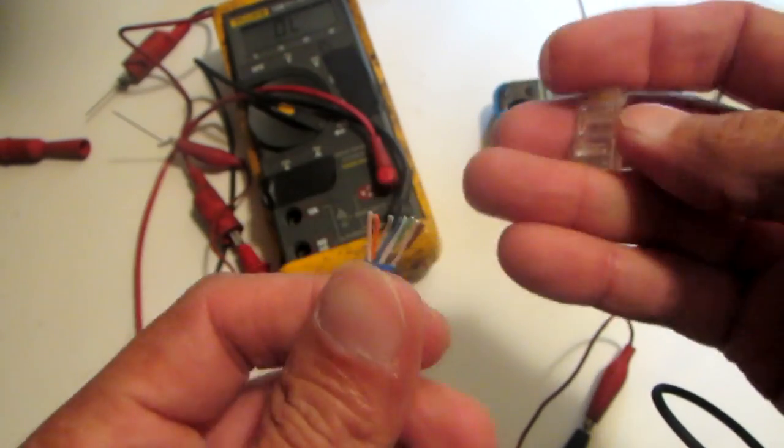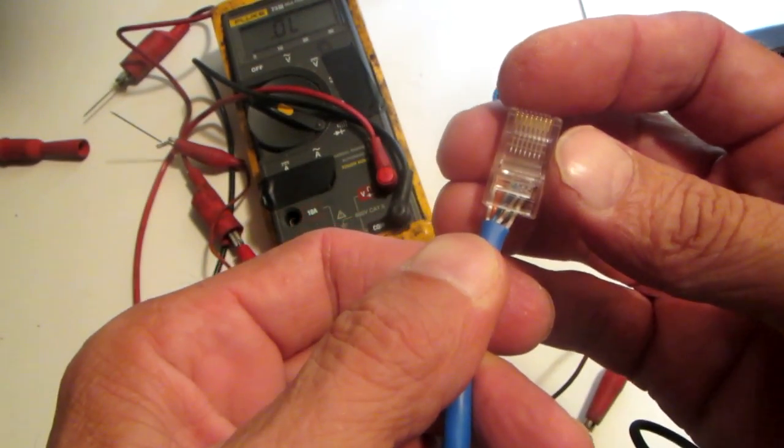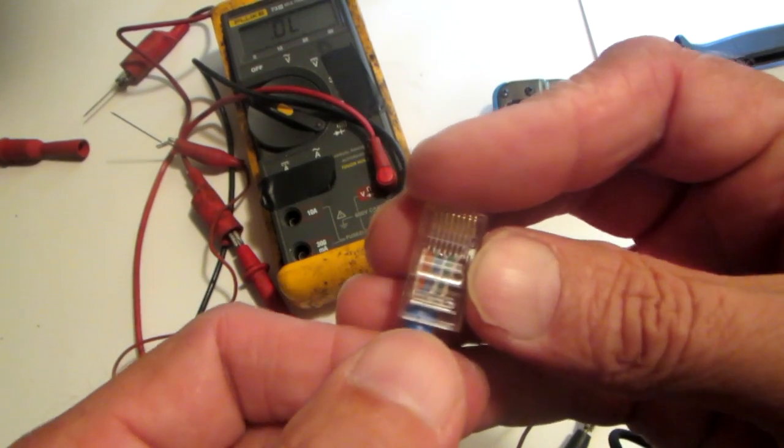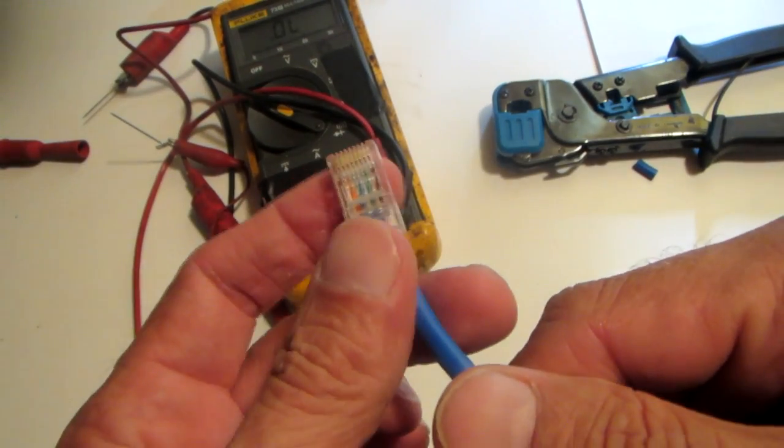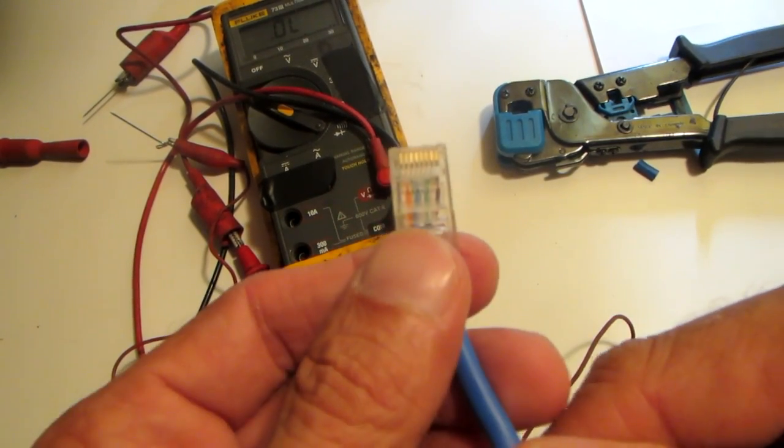I just got done building an ethernet cable for my network at the house and I don't have an ethernet cable tester, so I need to use my multimeter to test it and make sure I have good continuity between both ends of the plug.